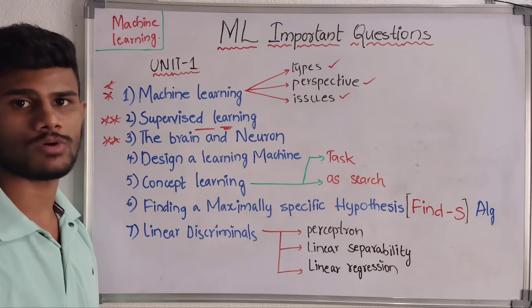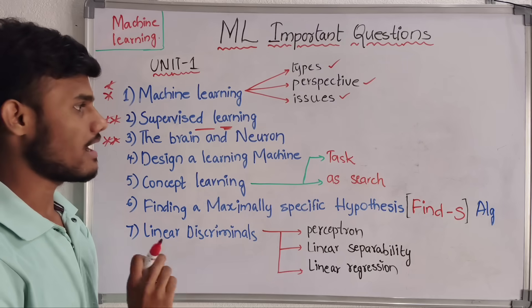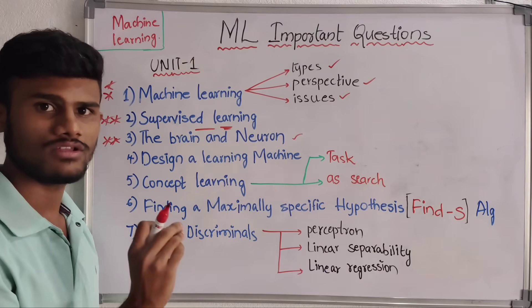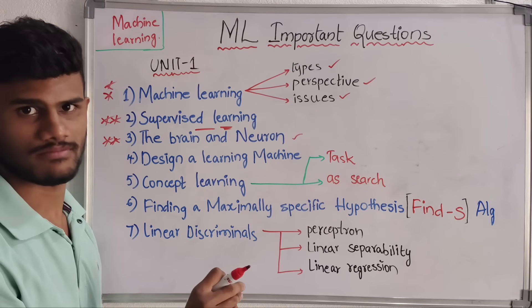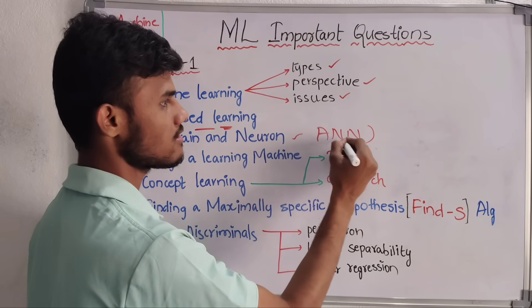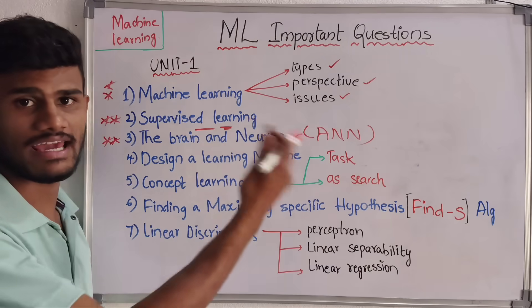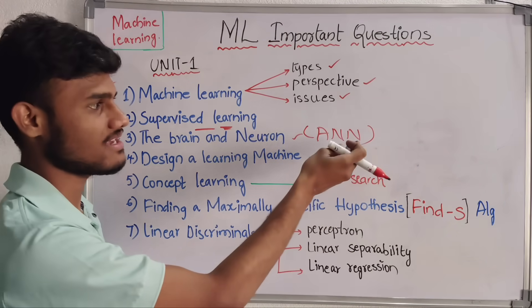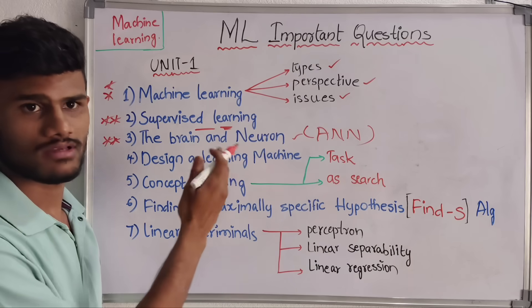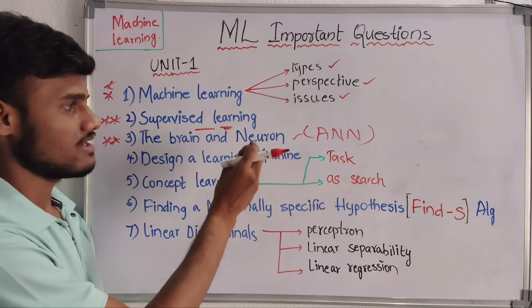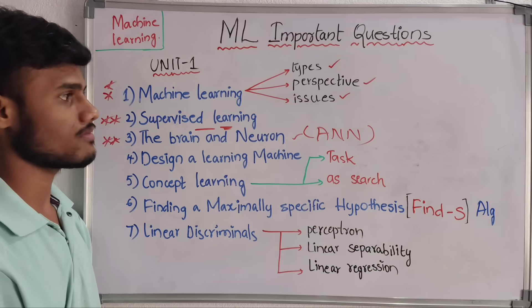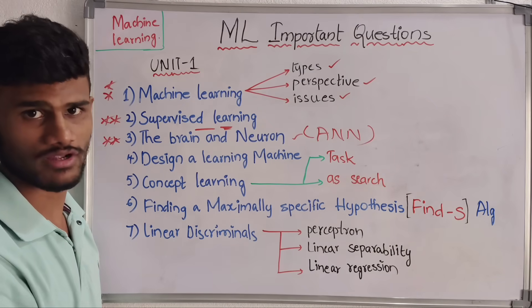Next we have the Brain and Neuron — the Neuron Network. It is an Artificial Neuron Network, also known as ANN. If they ask about ANN, we should answer the same question for that topic. The Neuron Network is a very important question.